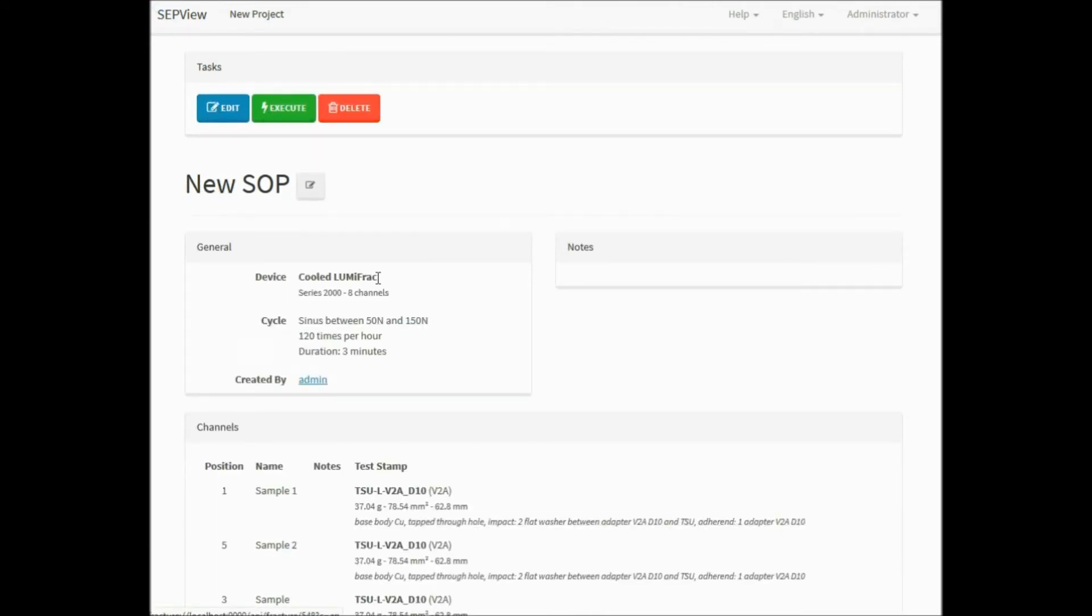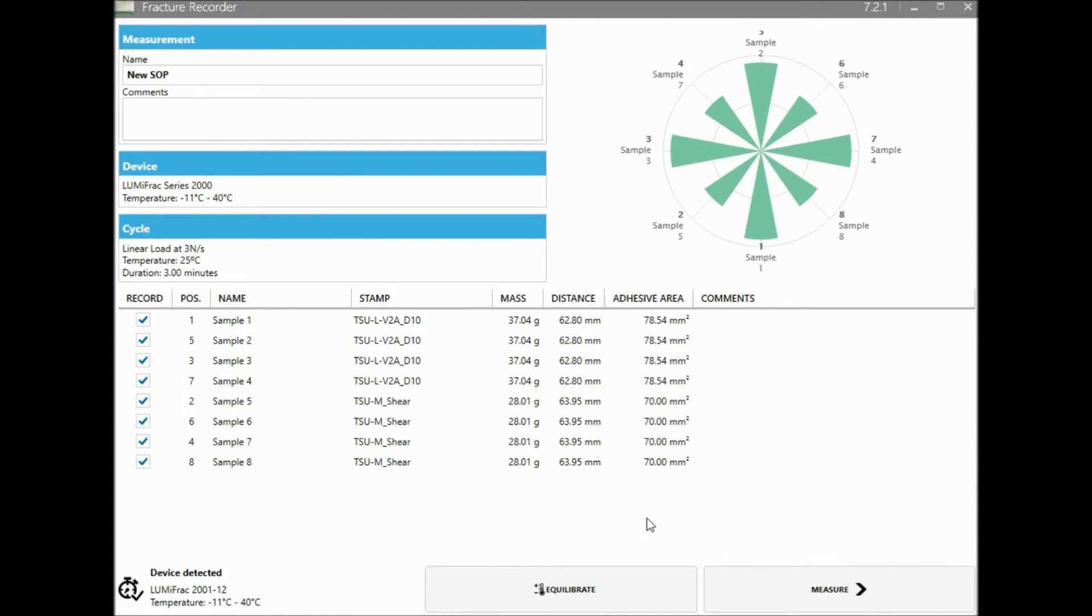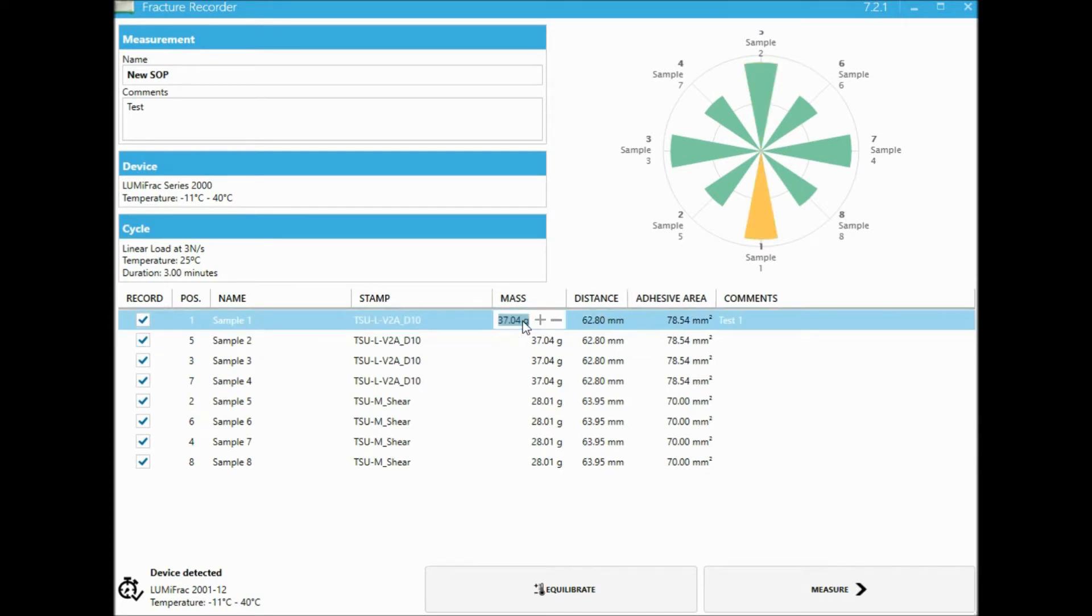Clicking on the Execute button advances you to the fracture recorder. Here you can change measurement name, sample names, masses, distances or areas if desired. You can also add additional comments to the measurement and individually for each test specimen. The device is shown in the lower left section of the fracture recorder window with information on rotor balance at the top right side. See here how we can adjust all the different settings for every sample at once.